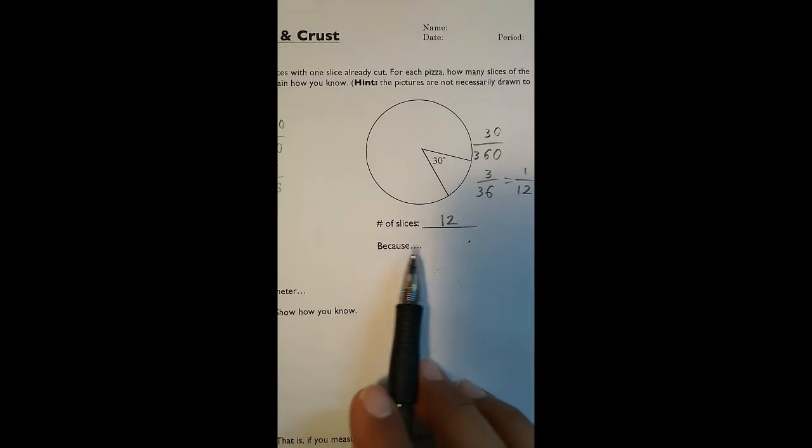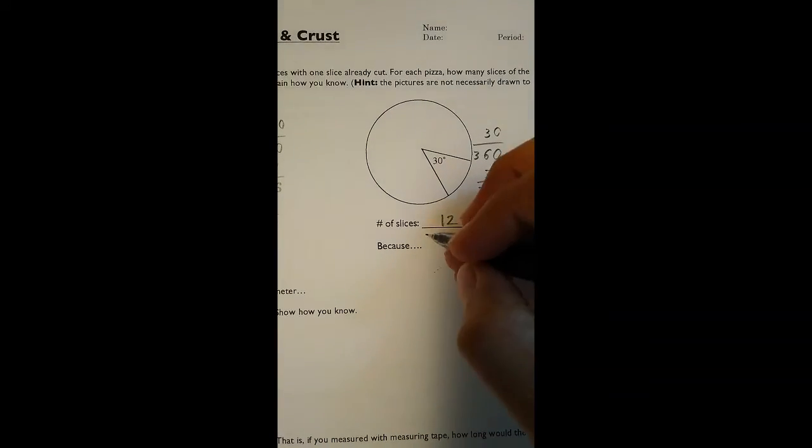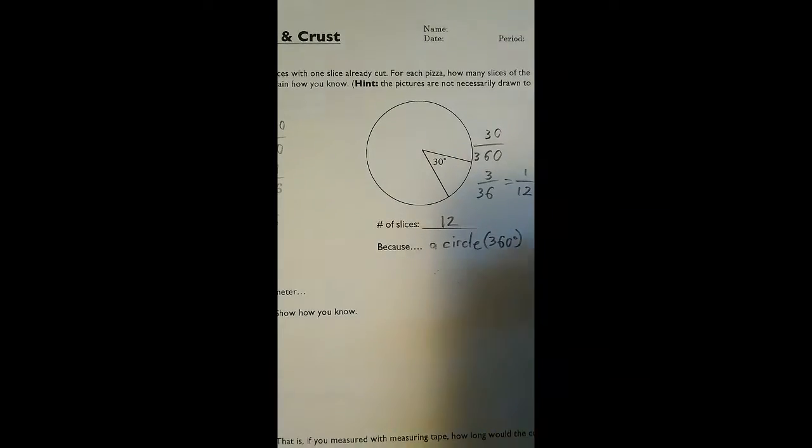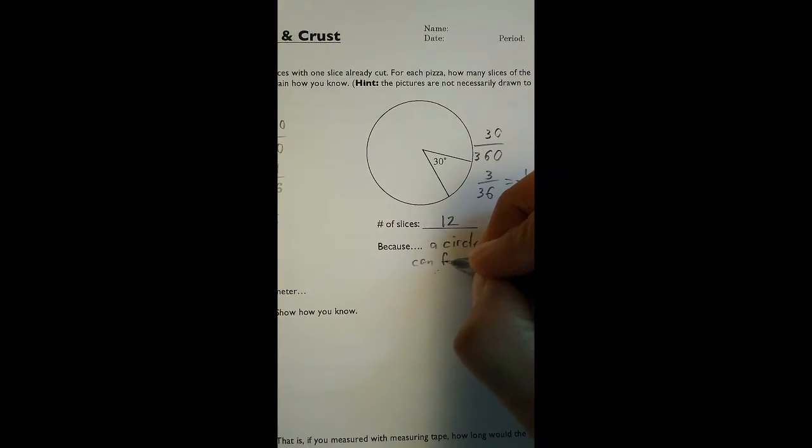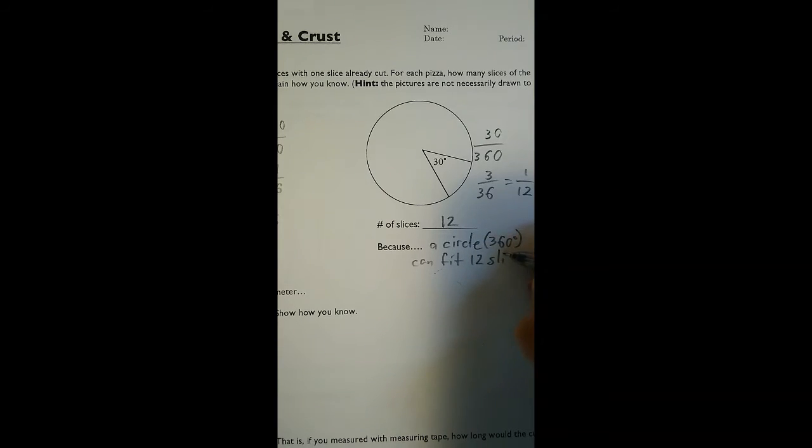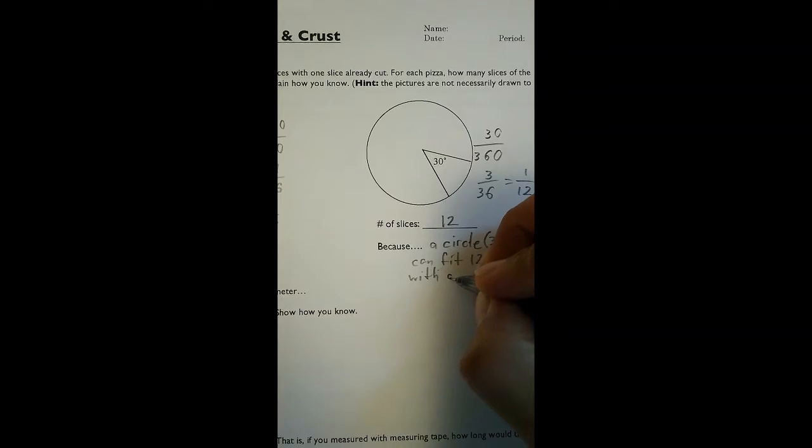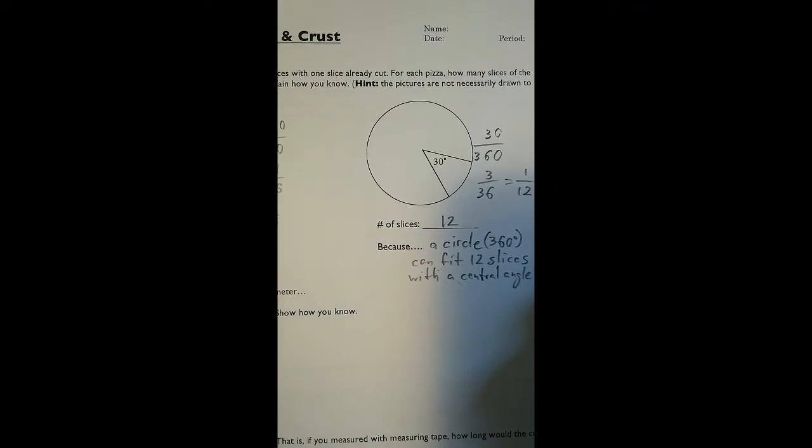And if we want to explain why, it's because a circle, which is 360 degrees, can fit 12 slices with a central angle of 30 degrees.